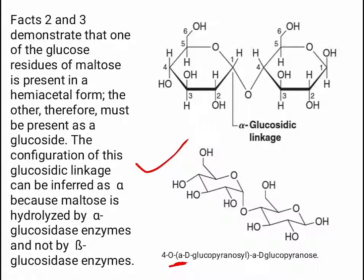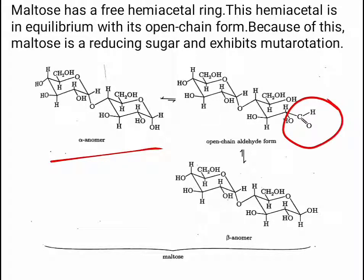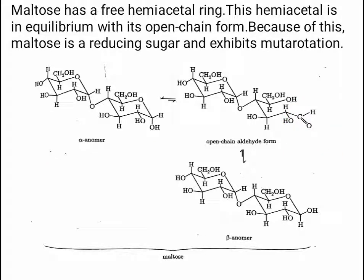The anomeric linkage in maltose is alpha. Maltose has a free hemiacetal ring in equilibrium with its open-chain form. Because of this, maltose is a reducing sugar and exhibits mutarotation. The open-chain aldehyde form can reduce Benedict's solution, Tollens' solution, and Fehling's solution, which is why maltose shows reducing properties and mutarotation.